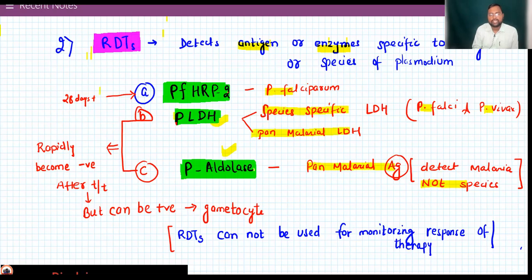This is positive up to 28 days even after treatment - you can get positive up to 28 days. But these two tests become rapidly negative after treatment, though they can be positive due to gametocyte.